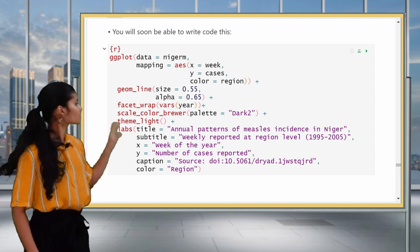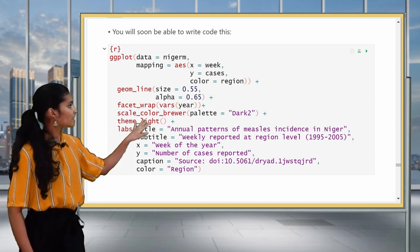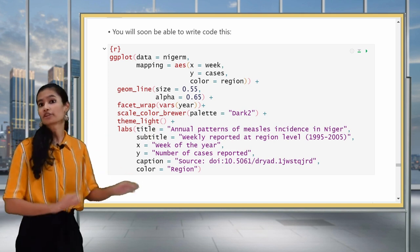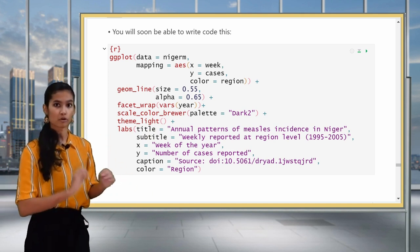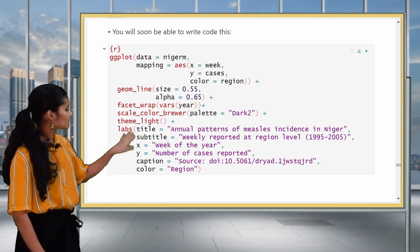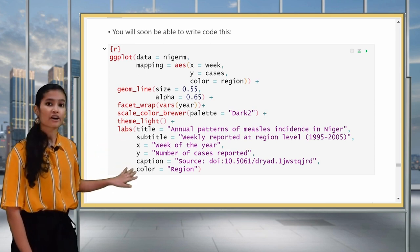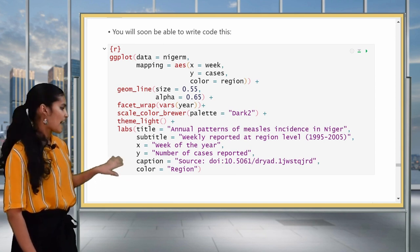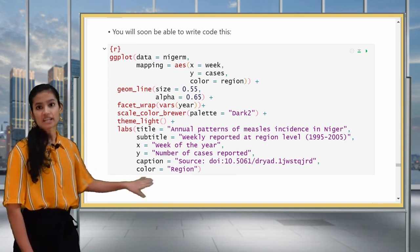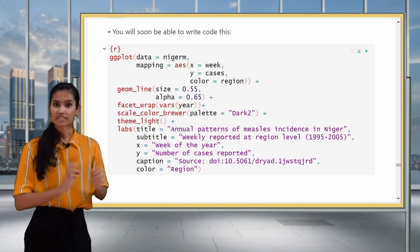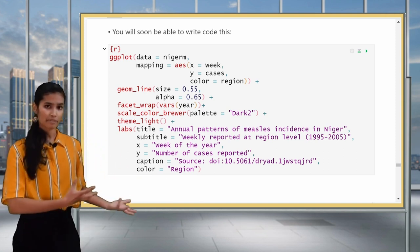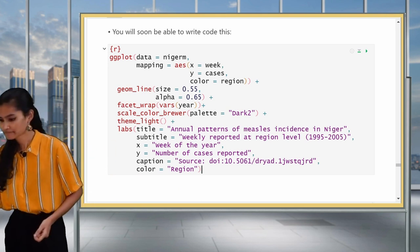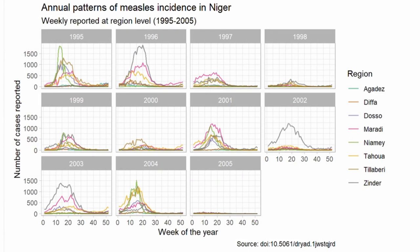The facet layer, you might remember as a gg layer, it creates subplots. We'll make subplots for each year. The scale layer here controls the color palette. Themes controls all the non-data ink of the plot, so it just makes it a little more attractive. And then last but not least, here are the labels. So we're adding a title, subtitle, changing the axis labels, adding a caption, and changing the name of the legend. This might seem complicated, but it'll just take you a couple of lessons to get here. Let's see what the plot looks like. And here is the resulting plot.